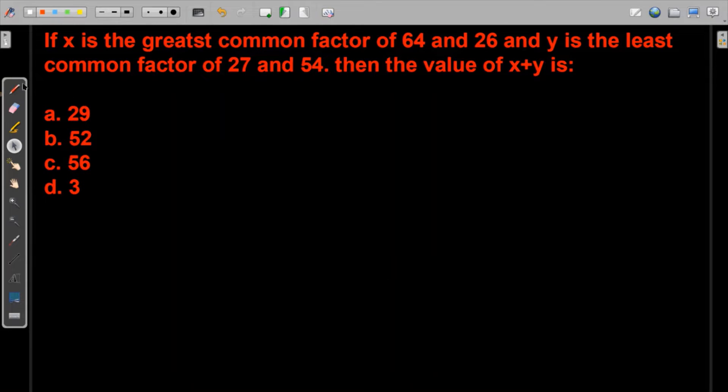In this equation, we have to find the greatest common factor of 64 and 26 to find x, then we have to find the least common factor of 27 and 54 to find y, and then we have to find the sum of x and y.